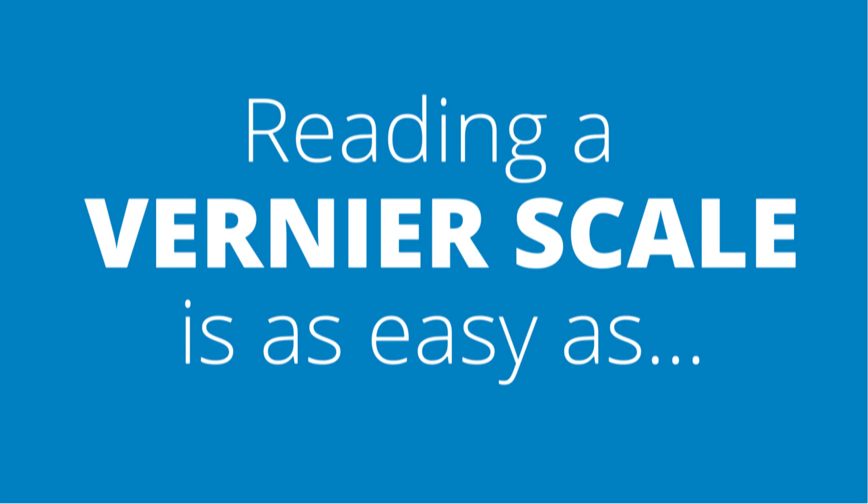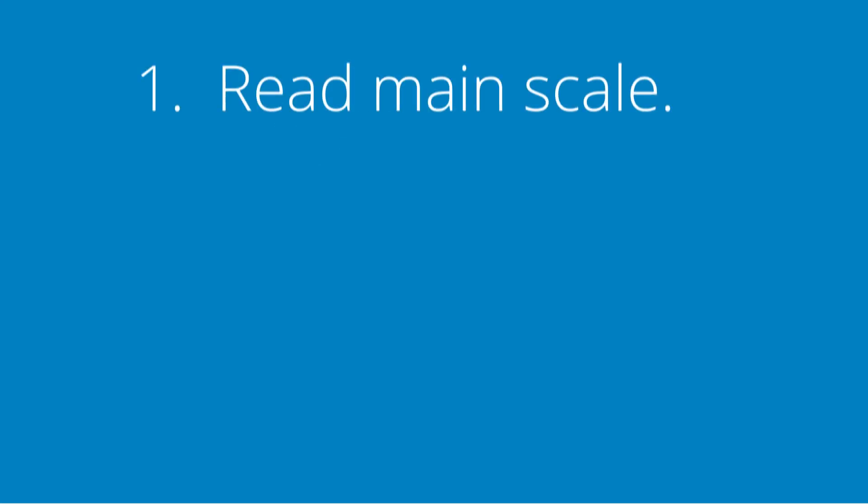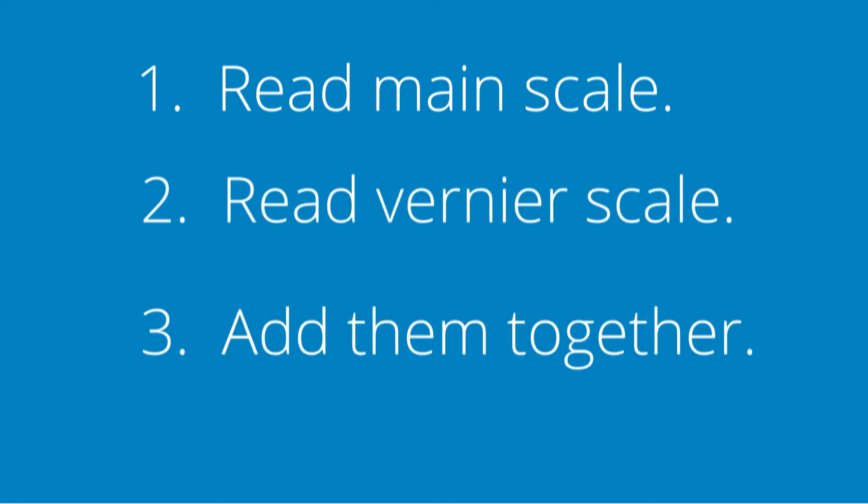Reading a vernier scale measurement is as easy as 1, 2, 3. First, take a main scale reading. Second, take the secondary scale reading. Third, add them together.